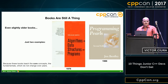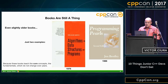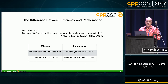Another thing junior developers don't get is that books are still a thing. They're not obsolete — not even older books, like these two that I have here. Because these books teach the core concepts and the fundamentals of programming, and those don't change over the years. Frameworks do. Languages do.